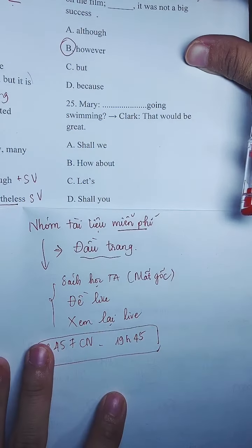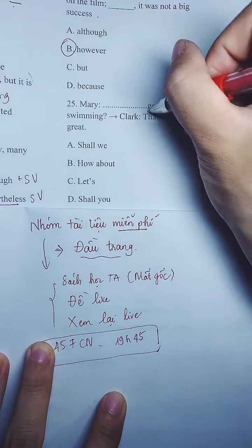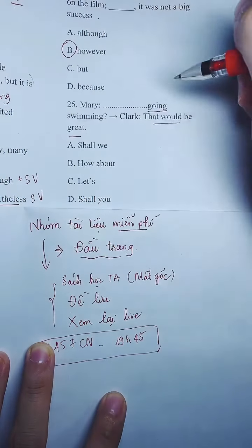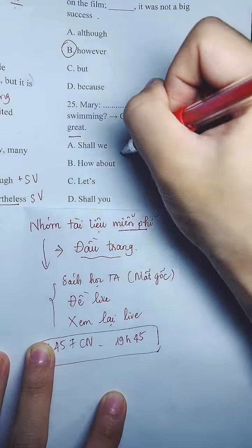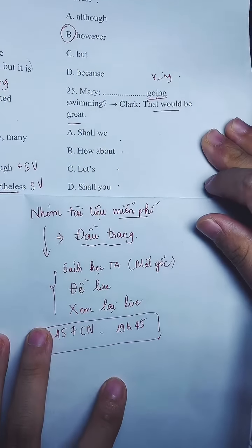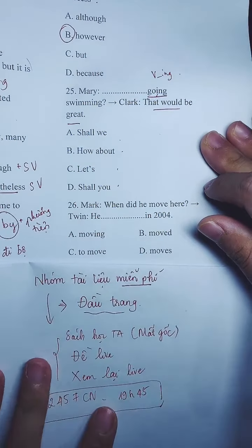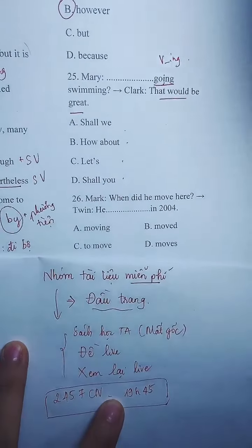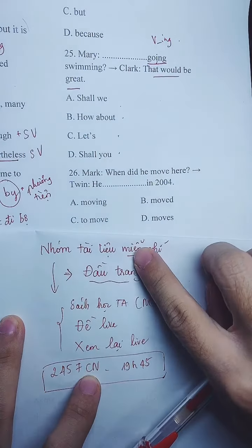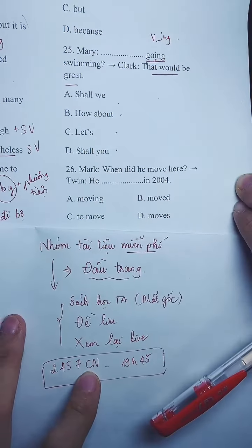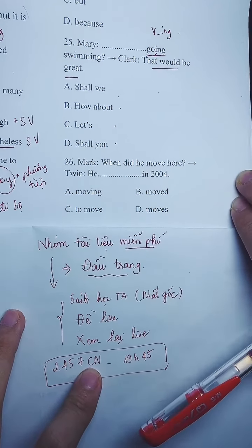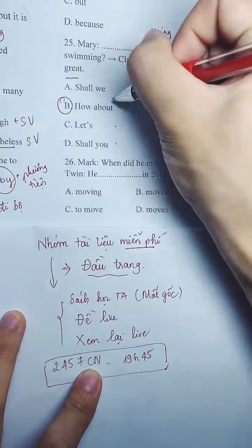Câu 25 là câu đưa ra lời đề nghị. Chúng ta sẽ có 'That would be great.' — chỗ này cộng với 'verb-ing'. Xét đáp án A, B, C, D: cái nào có 'verb-ing' thì chọn đó. Đáp án câu này chọn B — cái này cộng 'verb-ing'.